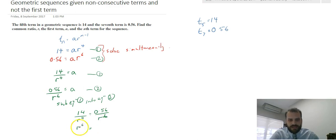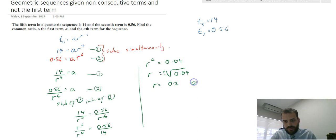That means that r to the 6 over r to the 4 equals 0.56 over 14. So I'm just going to continue working over here, r to the 6 over r to the 4 is r squared, r squared equals 0.04, so then r equals the square root of 0.04, but we're going to get two answers, a plus or a minus. So that means r equals 0.2 or negative 0.2.